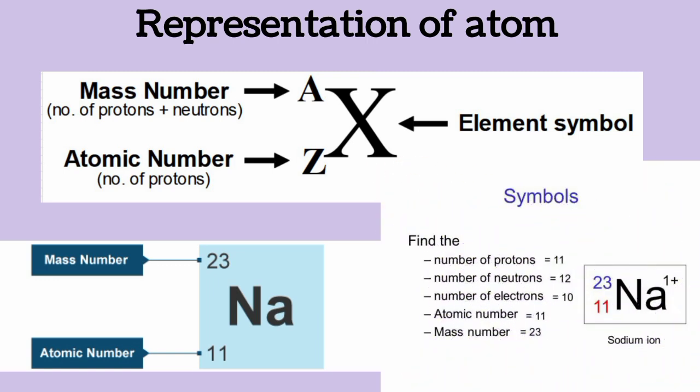Consider sodium with a mass of 23 and atomic number 11. The number of protons is 11, reflecting exactly the atomic number. The number of neutrons equals 12, found by subtracting 11 from 23. The number of electrons is 10. Because sodium here is Na⁺ — it has a plus one charge — it lost one electron. Therefore, the number of electrons decreases by one, giving 10 electrons instead of 11.